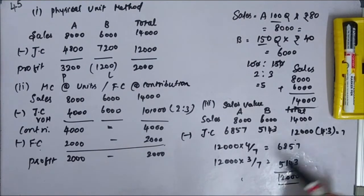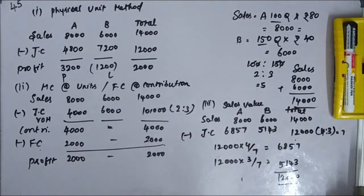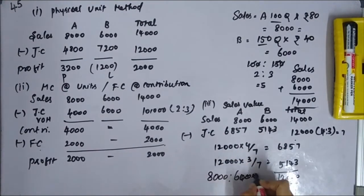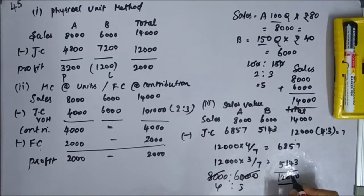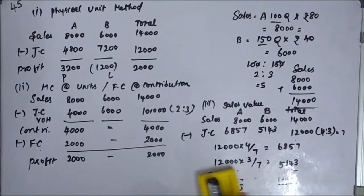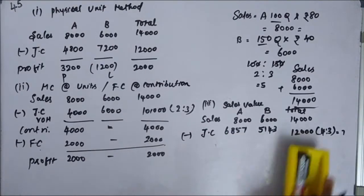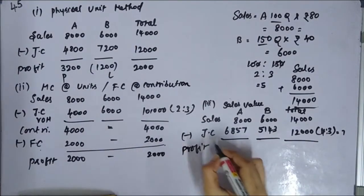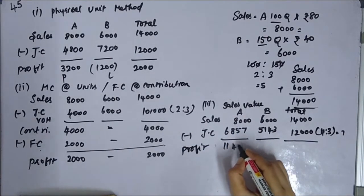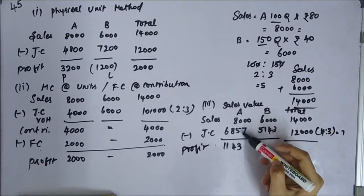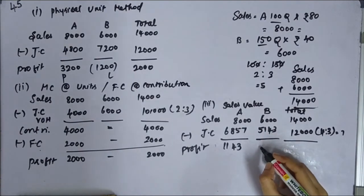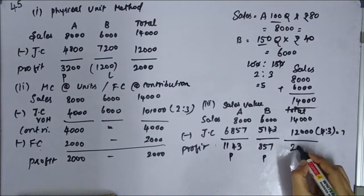Total joint cost is Rs. 12,000. Sales: A = Rs. 8,000, B = Rs. 6,000. After deducting variable cost of Rs. 4,000 for A and Rs. 6,000 for B, contributions are calculated. Fixed cost of Rs. 2,000 is apportioned on contribution basis. Profit for A and B is then derived from sales minus total joint cost allocated.